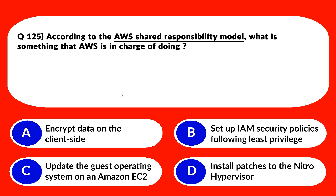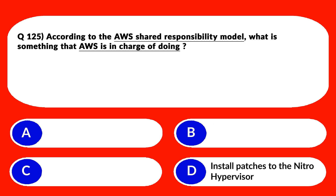Question 125 asks which task is solely AWS's responsibility, not the customer's. Options A, B, and C — encrypt data on the client side, set up IAM security policies following least privilege, and update the guest operating system on EC2 — are all customer responsibilities. Option D says 'install patches to the Nitro Hypervisor.' The customer has no control over the Nitro Hypervisor — it is solely AWS's responsibility. We reject A, B, and C and lock option D as the correct answer.